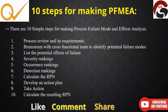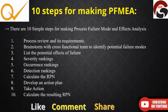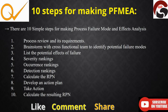Once we have the severity ranking, occurrence ranking, and detection ranking, we need to calculate the RPN. RPN is equal to severity ranking multiplied by occurrence ranking multiplied by detection ranking. We can use a Pareto chart to identify the vital few — those with the highest RPN — versus the trivial many, which have relatively low RPN. We then develop an action plan and recalculate the RPN after making improvements to see whether it has come down.